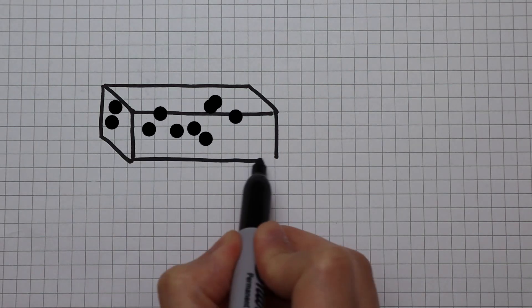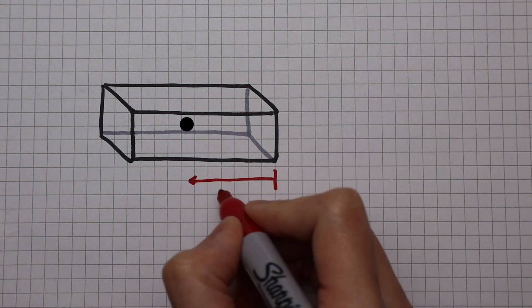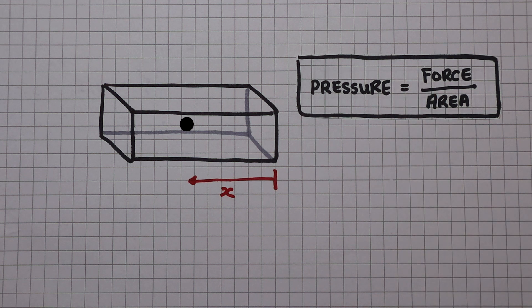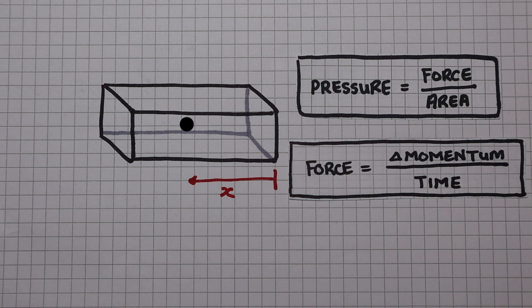Let's isolate just one single particle in this container of gas and label this length x. We know that pressure is equal to force over area. And Newton's law of impulse tells us that force is equal to change in momentum over time.